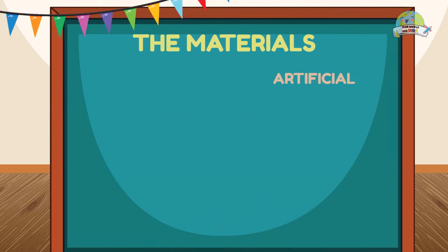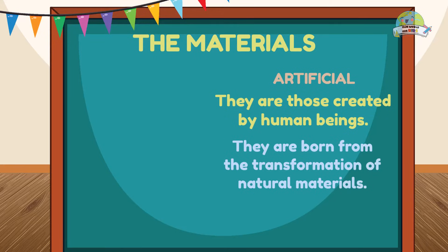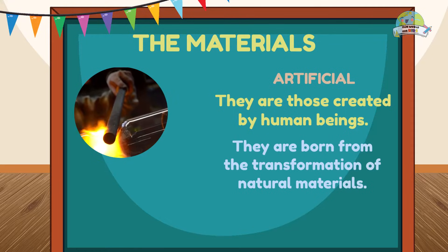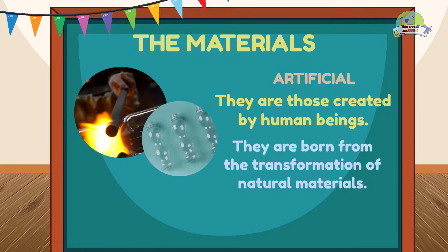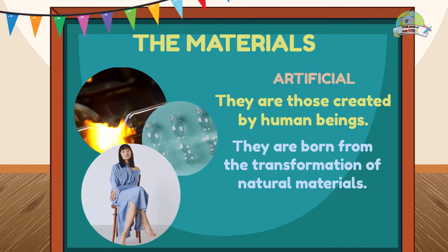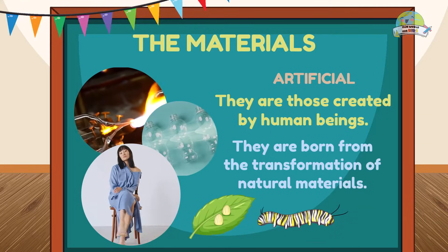Artificial materials are those created by human beings, and they are born from the transformation of natural materials — like glass, which is made with minerals; plastics, which are made with petroleum; and cardboard. Or the fabric of this beautiful dress, which is made by transforming caterpillar silk.